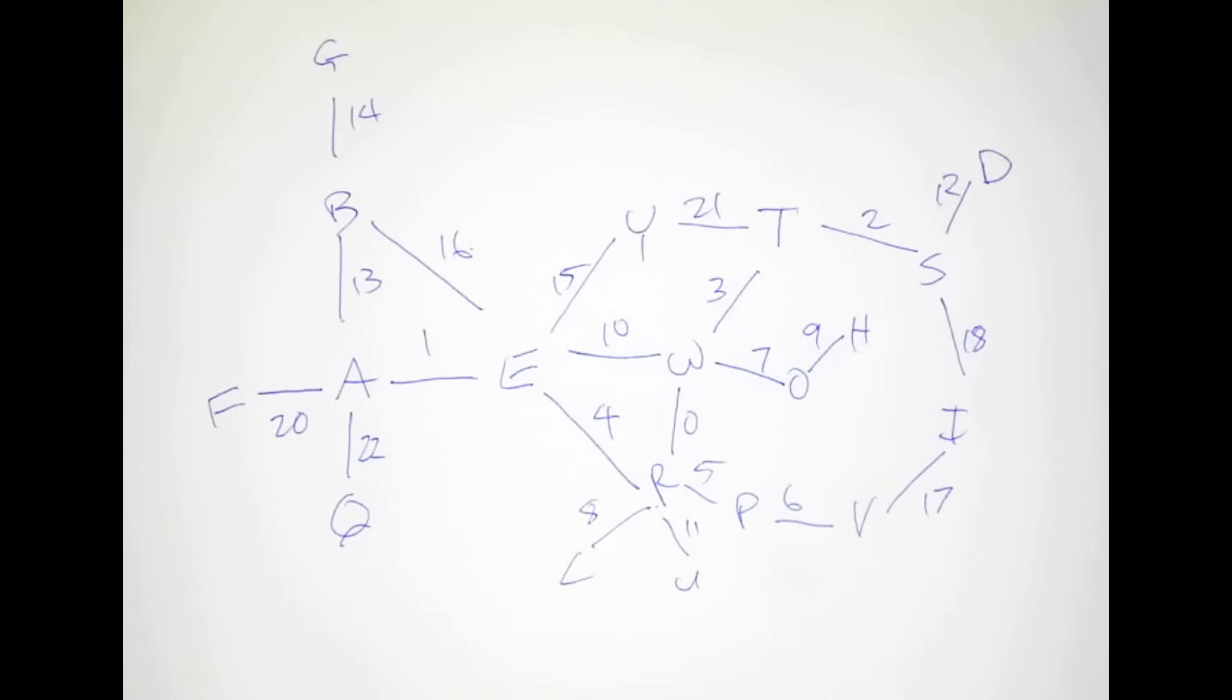Now, I can see a few loops here. E-A-B-E, E-Y-T, S-I-V, P-R-E, and there are two inner loops, E-Y-T-W-E and E-W-R-E.